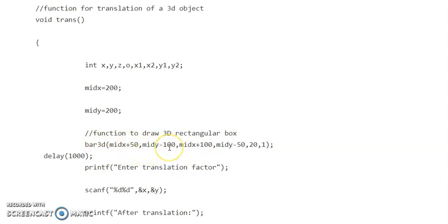Bar 3D in bracket: midx plus 50, midy minus 100, midx plus 100, midy, midy minus 50, and then 20, 1. What these coordinates are, we have discussed earlier.